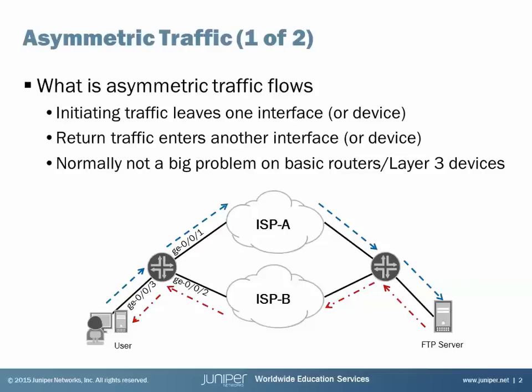We can have asymmetric traffic flows with multiple devices — multiple local routers where initiating traffic leaves one router and returns on the other. But in this Learning Byte, we're going to focus on asymmetric traffic with one router, like in this example. Normally this isn't a big deal for a basic router or Layer 3 device, because it doesn't care which interface traffic comes in on — it just wants to forward traffic to the destination.